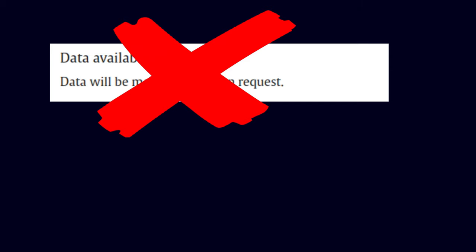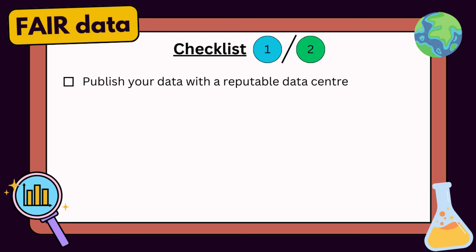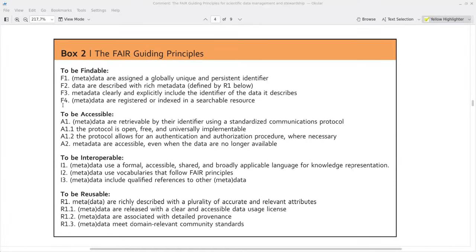Most people are aware of this by now, but just to make sure we're all on the same page — your data shouldn't just be made available on request to the corresponding author of your paper, nor should they just be tucked away in the supplementary materials. Your data should be published independently with a reputable data center. That's going to be the first item in our checklist: publish your data with a reputable data center. And this is point F4 of the FAIR principles — data and metadata are registered or indexed in a searchable resource.